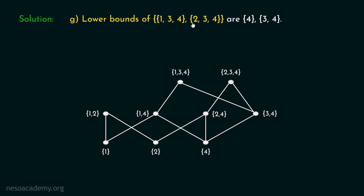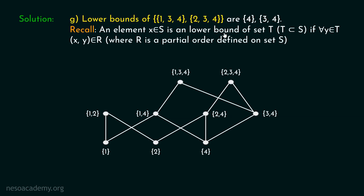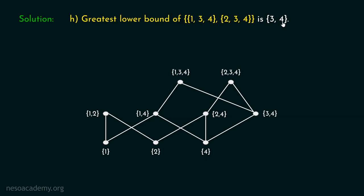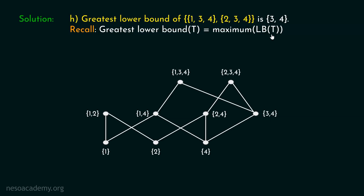Now we have to find the lower bounds of this set. The lower bounds of these two sets are found by following the path downwards and finding the meeting points. An element x belonging to S is a lower bound of set T if for all y belonging to T, (x, y) belongs to R. The two lower bounds are found at the meeting points going downward. The greatest lower bound is the maximum of all lower bounds, which is {3, 4}.